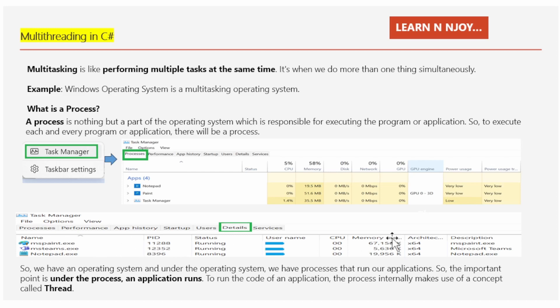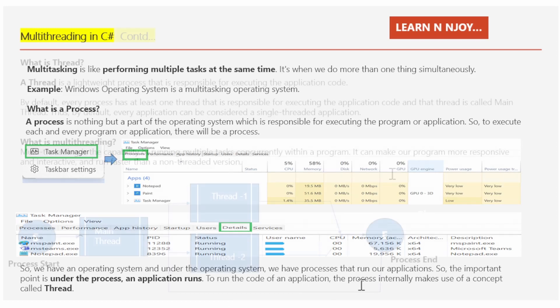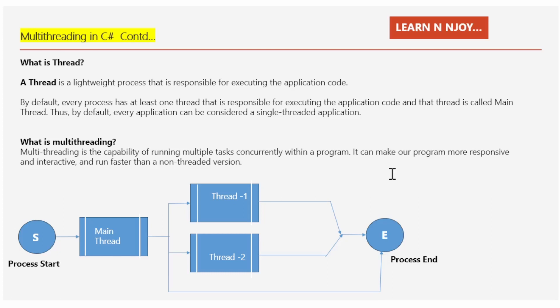So we can say that under the operating system, we have processes that run our applications. The important point is that under the process, the application runs. To run the code of an application, the process internally makes use of the concept called a thread. What is a thread? A thread is a lightweight process that is responsible for executing the application code. By default, every process has at least one thread responsible for executing the application code, and that thread is called the main thread. Thus, by default, every application can be considered a single-threaded application.